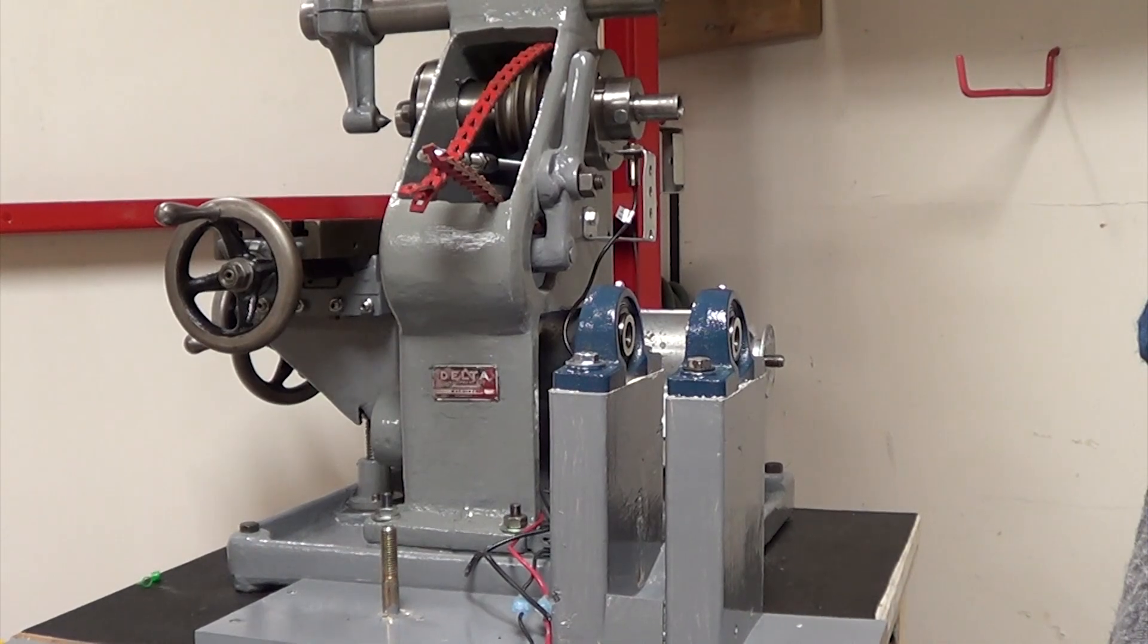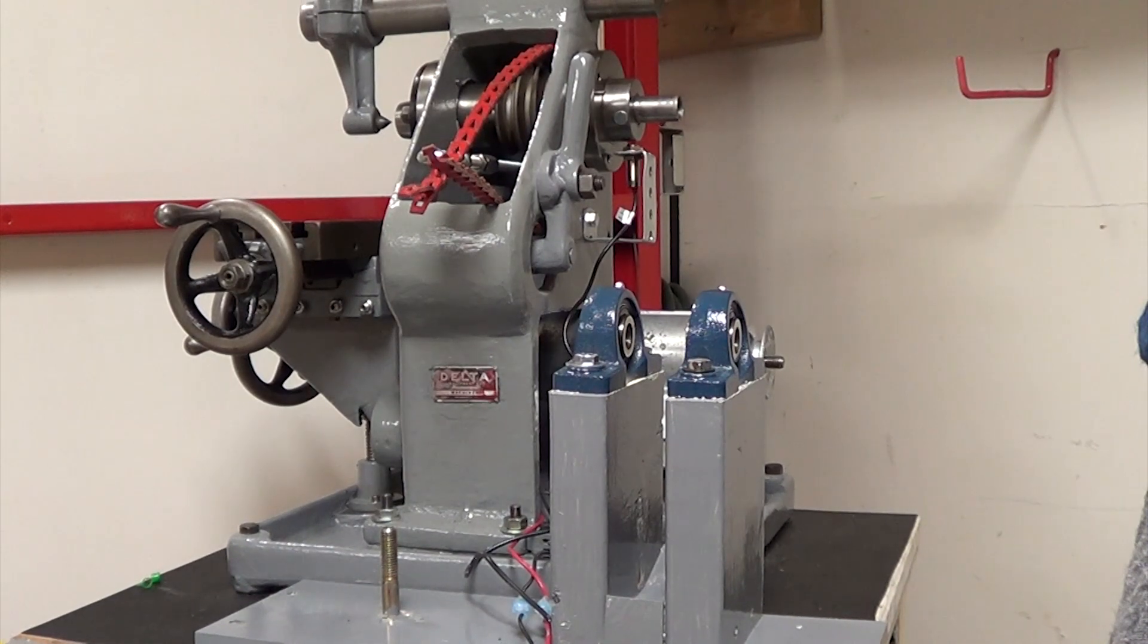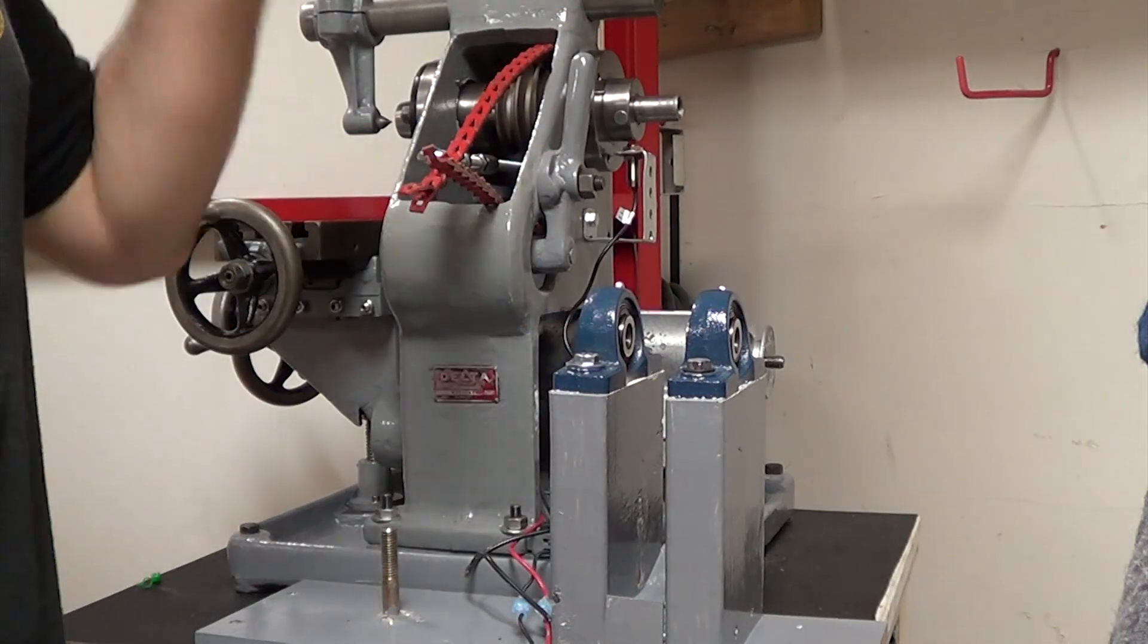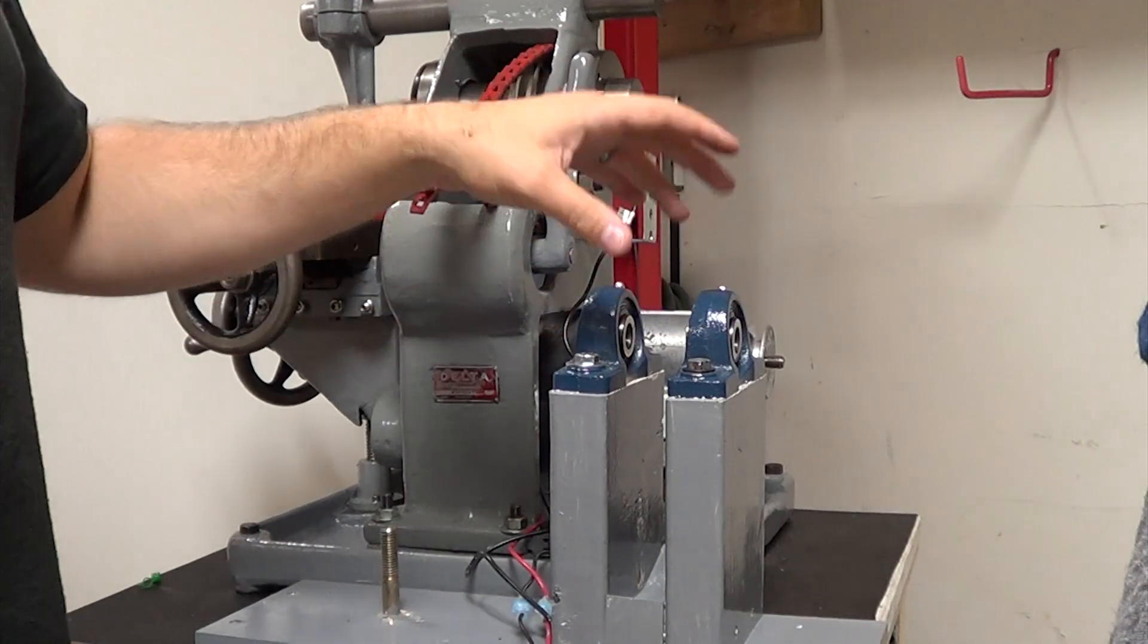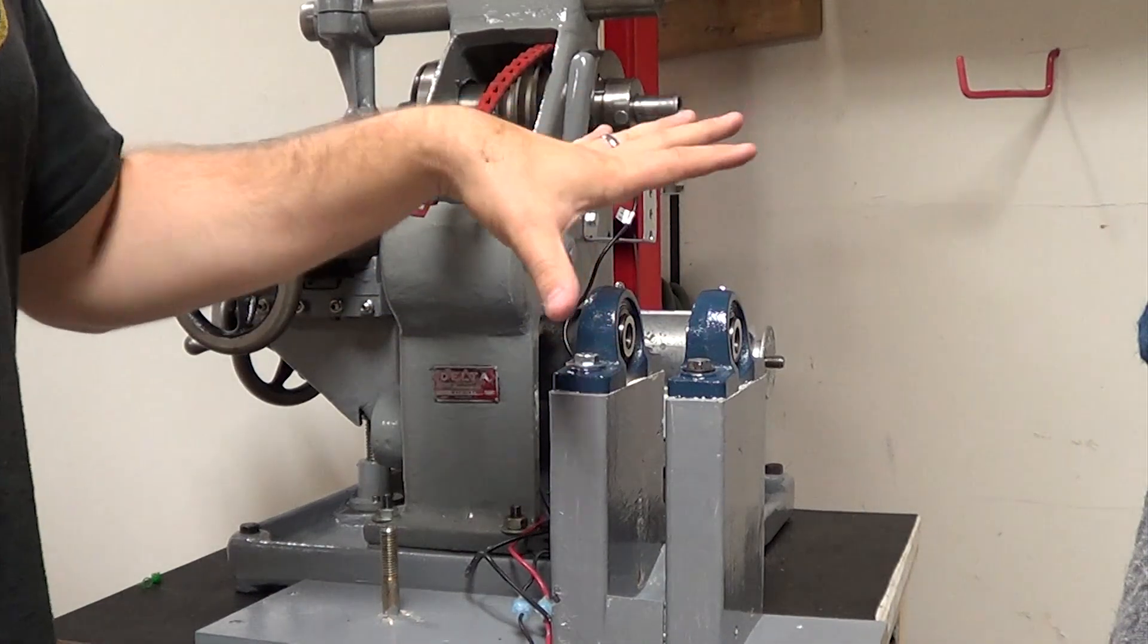I got the machine pulled out of the way off the wall so you could get a better shot at this. I've got my motor back here. I've got a set of blocks, a set of bearing blocks here. And that's going to ride with a 12 inch pulley.